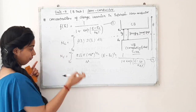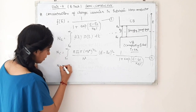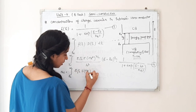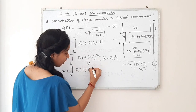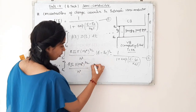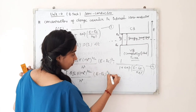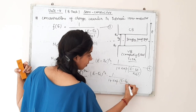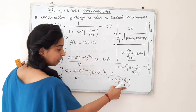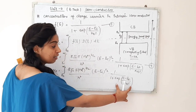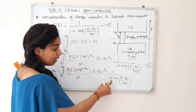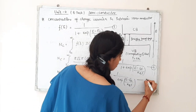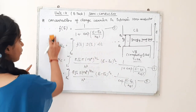We have to solve this expression. Nc equals the integral from Ec to infinity of (8√π me*^(3/2) / h³) × (E − Ec)^(1/2) × 1/[1 + exp((E − EF)/kBT)] dE. At equilibrium temperature, the exponential factor is much greater than 1, so we can neglect the 1 in the denominator. This gives us equation 5.